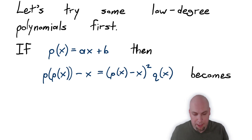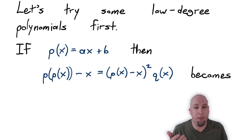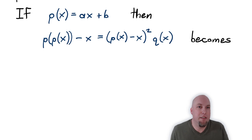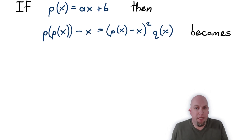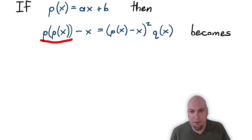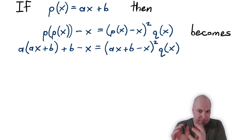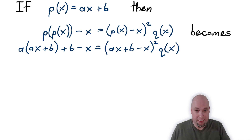Let's start off with low degree polynomials — in particular, linear polynomials. Let's ask which polynomials of the form p(x) = ax + b have the property that there exists a polynomial q making this equation solvable. To solve this, let's just plug that polynomial in — everywhere you see p(x), replace it by ax + b on both sides. What you end up with is a times (ax + b) plus another b from the outside, minus x on the left hand side.